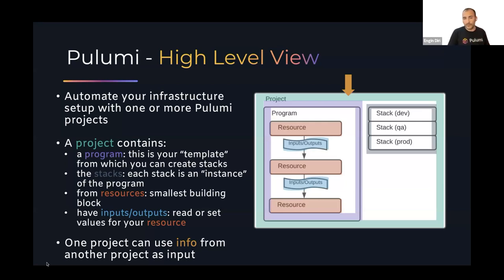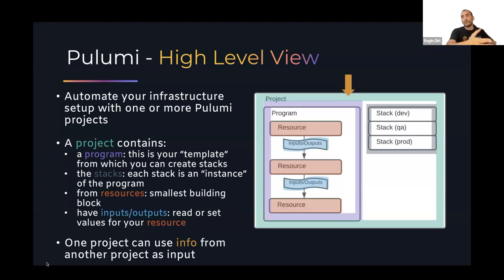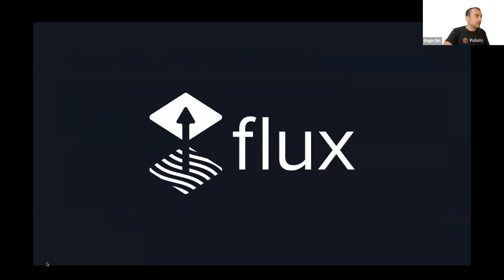When something goes wrong, the blast radius is also smaller because, for example, S3 buckets belong to a different stack where you might not even have rights. That's a lot to cover, but let's move to our second component and pass to Kingdon to explain Flux.